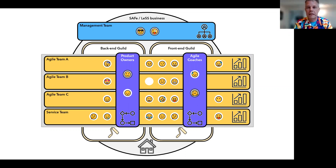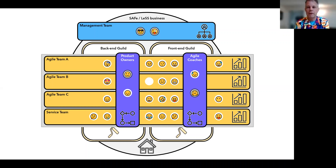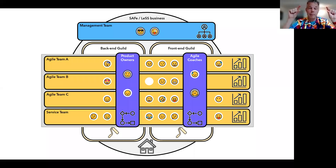In the back you see 'back-end guild' and 'front-end guild.' This is familiar to many of you: people want to get together around a certain topic, whether it's UX meetups or TDD across the various teams. As a guild you talk with each other. I usually refer to these as forums, because a forum is a place where you go, talk, and maybe sometimes make a decision about how to get work done.